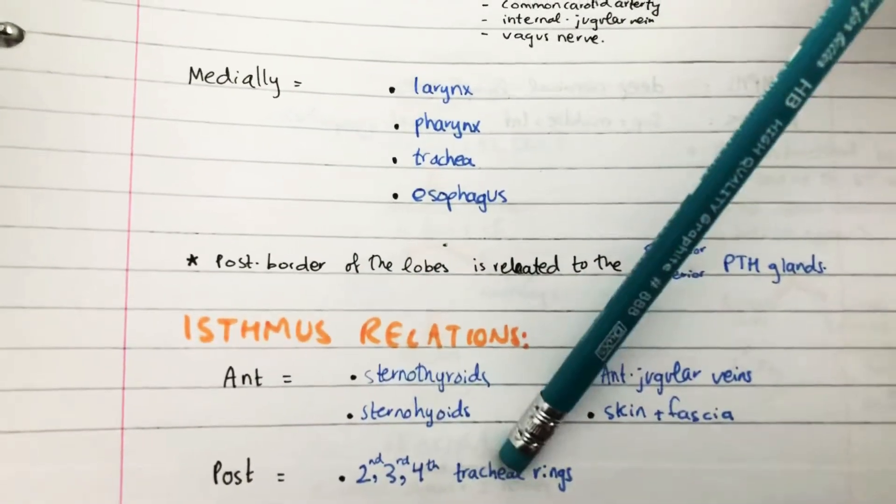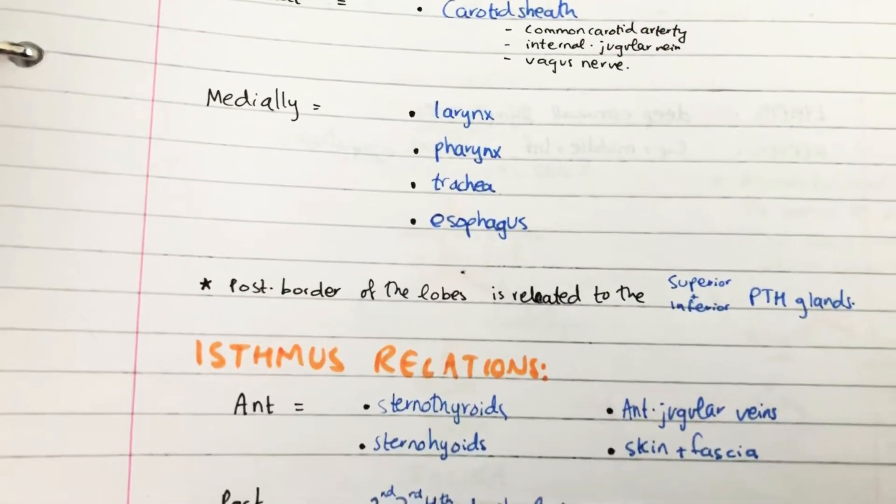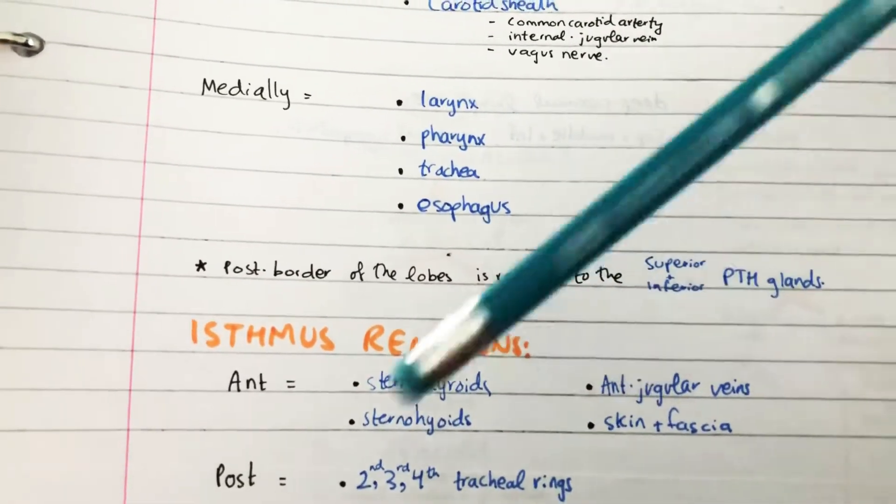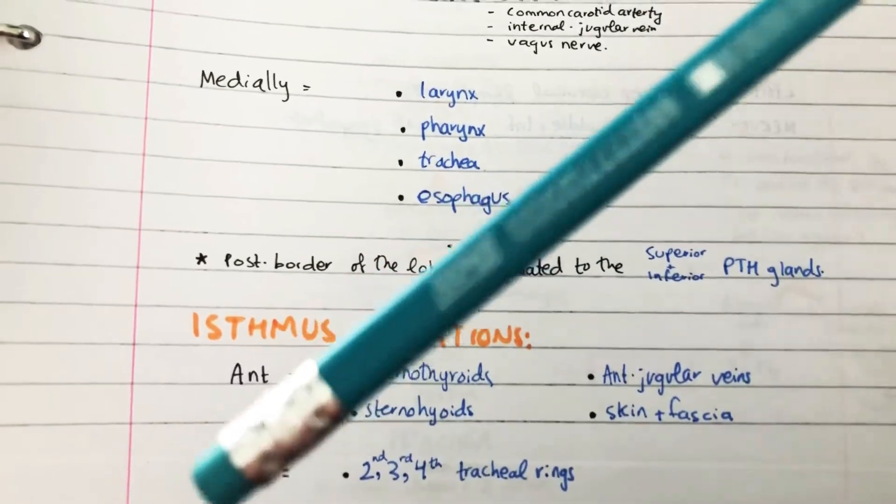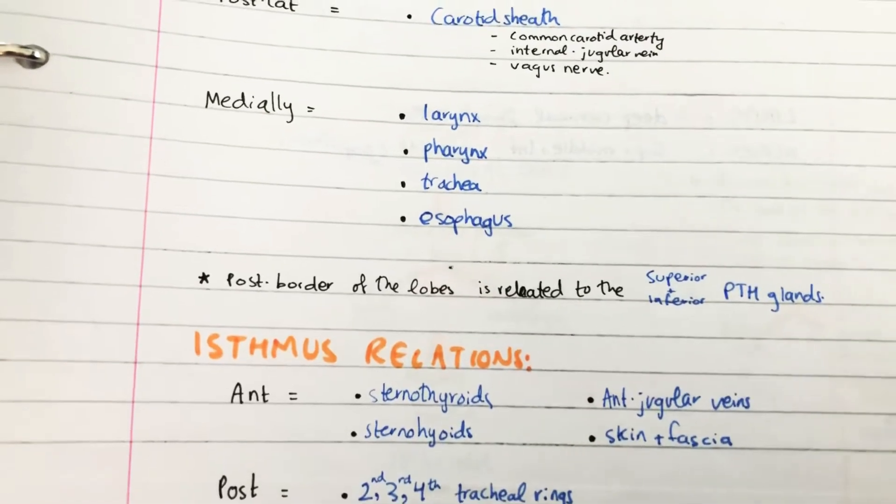And posteriorly, just again think about where this is lying. It's in the neck, so posteriorly there are going to be the tracheal rings—which rings? The second, third, and fourth rings.